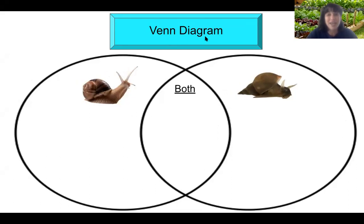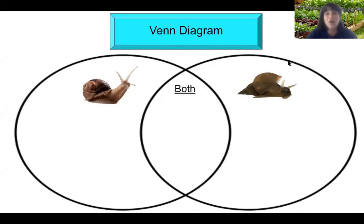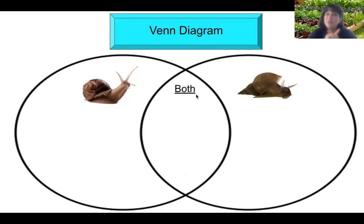Here's our Venn diagram — a labeled Venn diagram with two intersecting ovals. This oval belongs to the land snail. Anything that is only for the land snail goes over here under the land snail. All the information that belongs to only water snails goes here under water snails. If the word or item belongs to both types of snails, we're going to put it right here in the middle section under the word 'both.' For this part, you're going to be needing your pointer power finger and you're going to be pointing to see where we need to put the information.